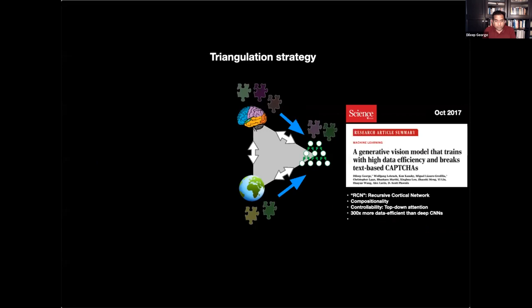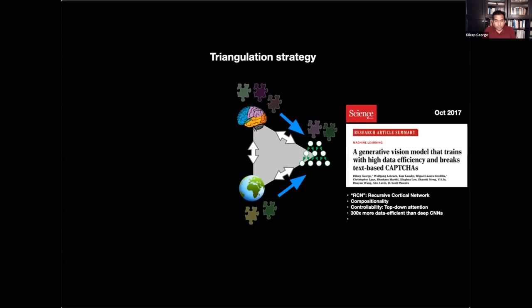So the first step in our approach was to take insights from the brain and build a computational model, an algorithmic model, so that that model can stand on its own. Although it uses insights from the brain, it is purely specified as a computational and algorithmic model. And this is a generative vision model that we published in Science in 2017. It got a good amount of attention because this was also used to break CAPTCHAs, fundamentally break the difference of text-based CAPTCHAs using this generative model. And it is much more data efficient than deep neural networks. And one key differentiator is that it uses feedback and lateral connections to explain a scene of characters rather than just doing pattern recognition feed-forward.